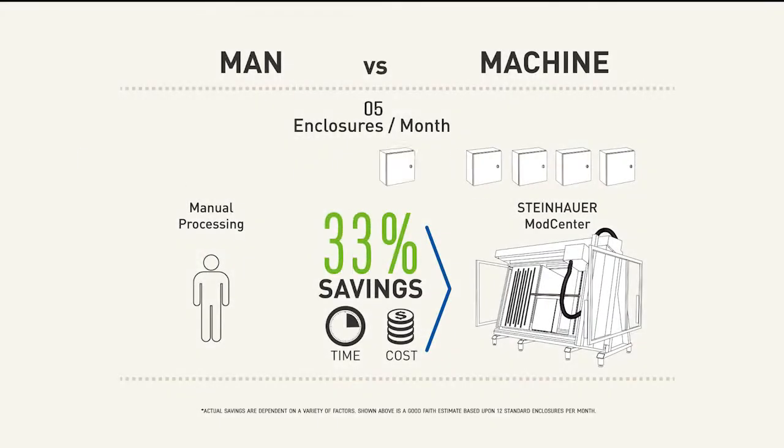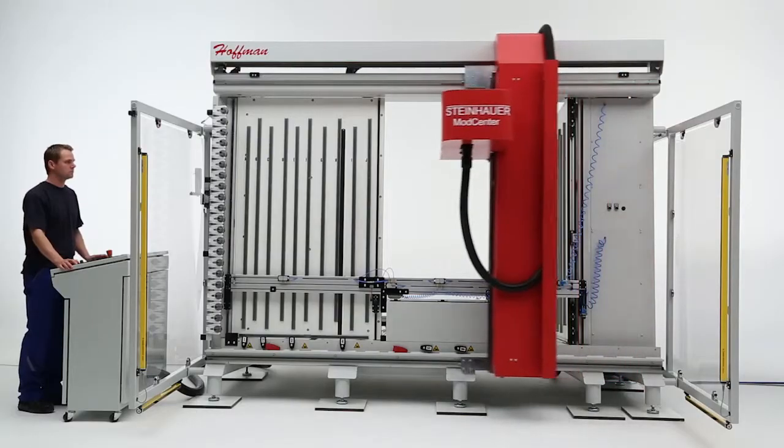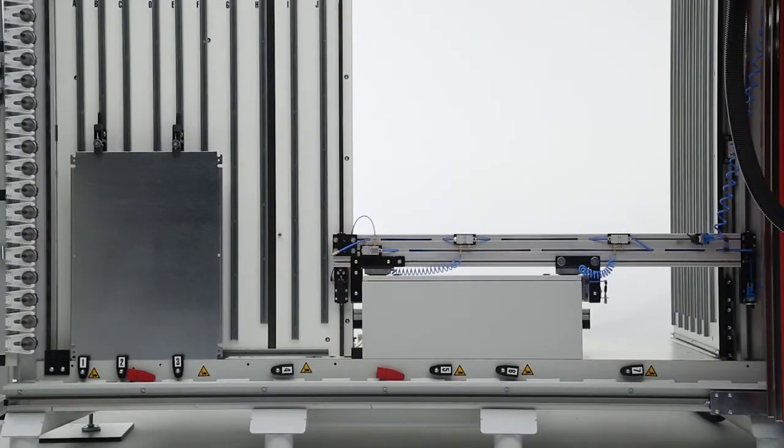With break-even achieved in as few as 12 modified enclosures per month, a ModCenter can pay for itself quickly and offers the turn times, versatility and productivity you need to grow your business.